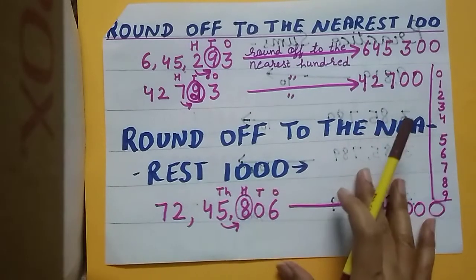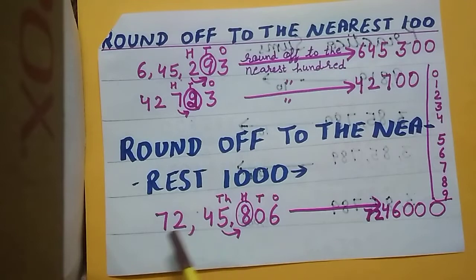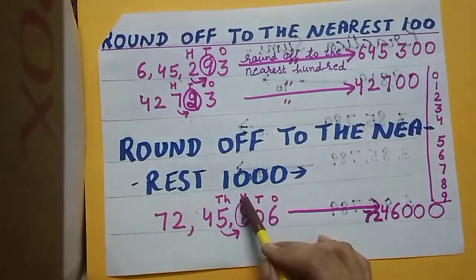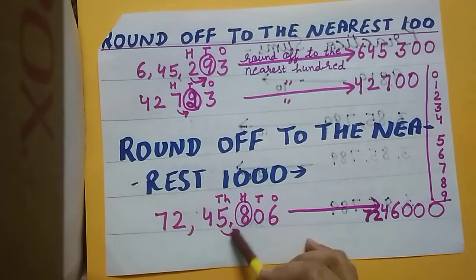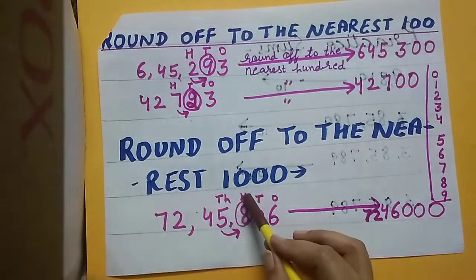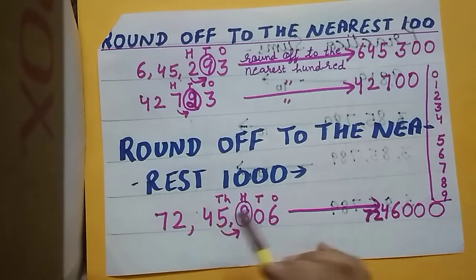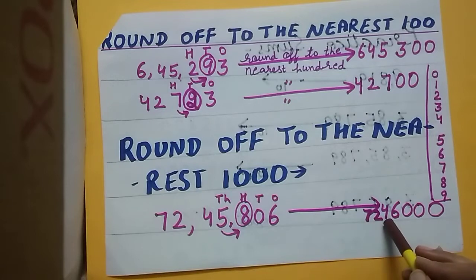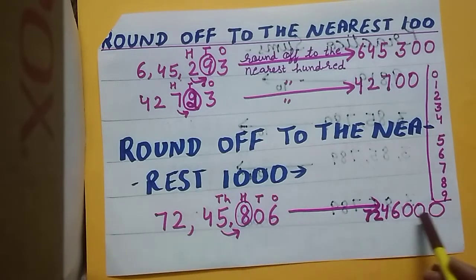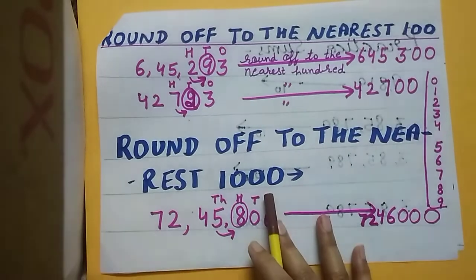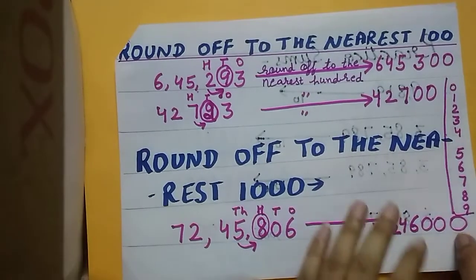Now, round off to the nearest thousand. The given numeral is 72,45,806. Write down the places: ones, tens, hundreds, thousands. Circle the digit just right of the thousands place, which is the hundreds place. The digit is eight — eight is more than five, so it will become zero and five will increase by one to become six. Our answer will become 72,46,000. Reading the number: seventy two lakh forty six thousand.